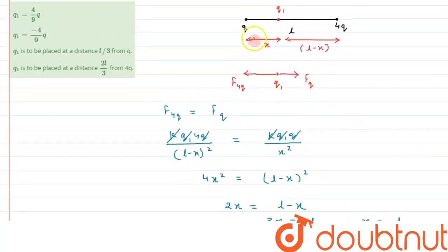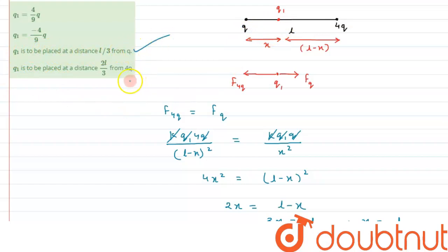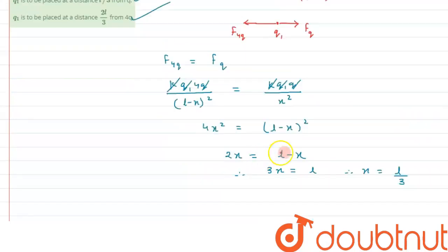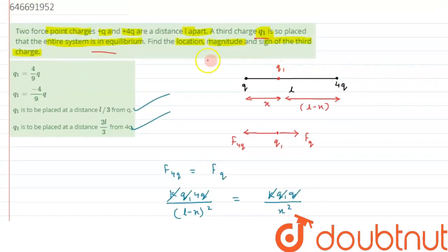So charge q1 is to be placed at a distance of l/3 from charge q. Correspondingly, it will be at a distance of 2l/3 from charge 4q. Both of these are correct options. Now we need to calculate the magnitude and sign of the charge.